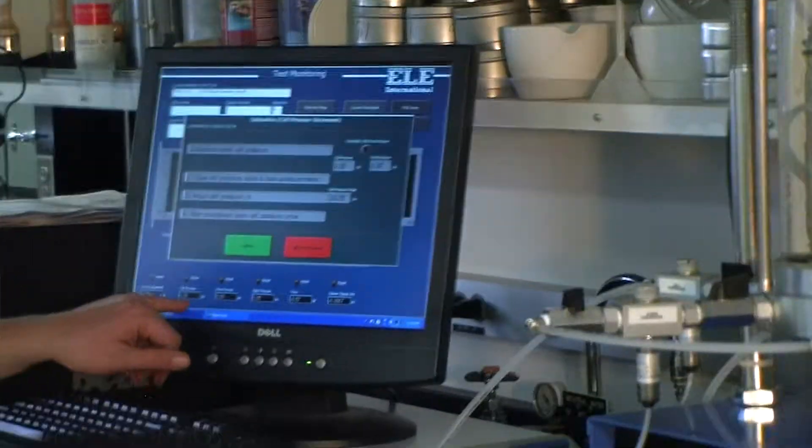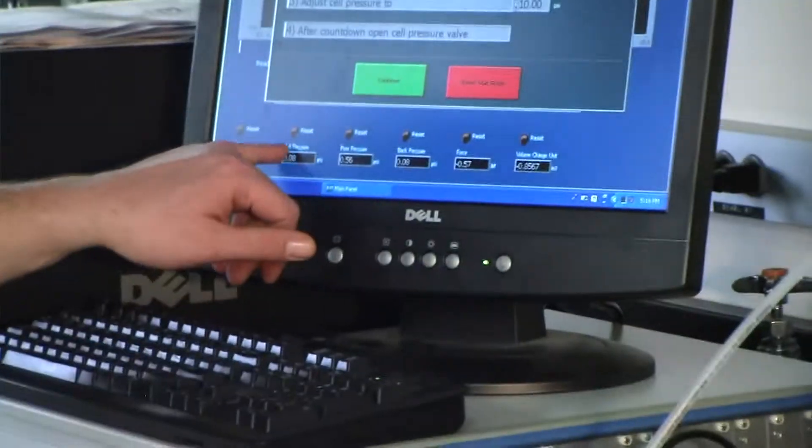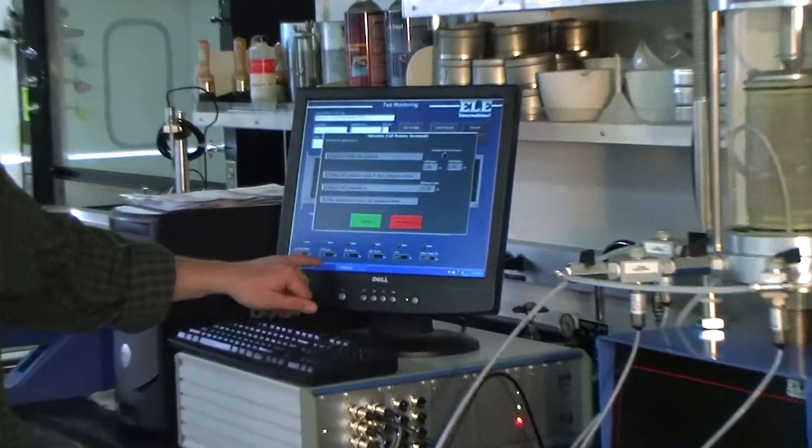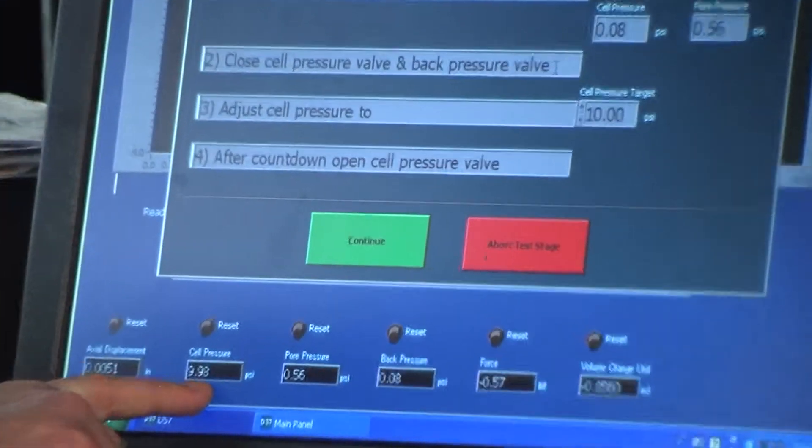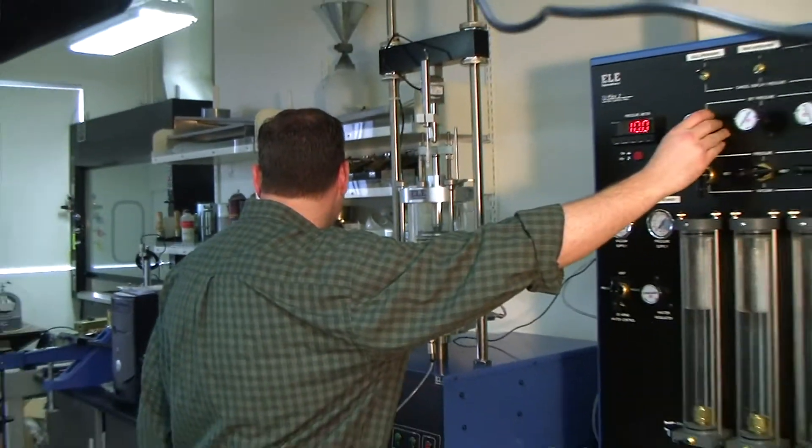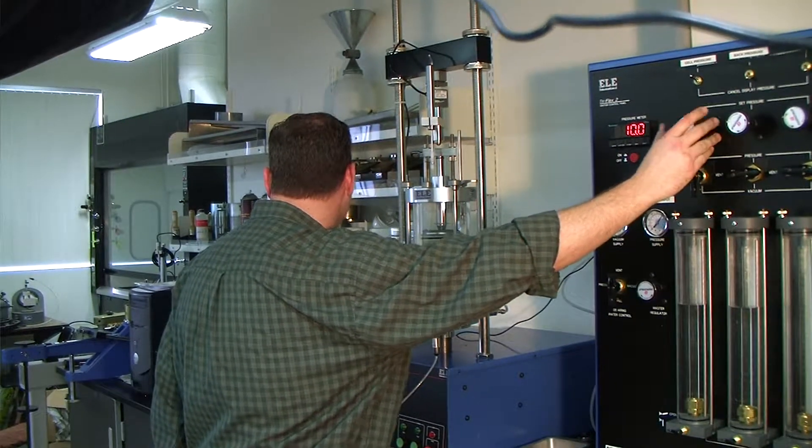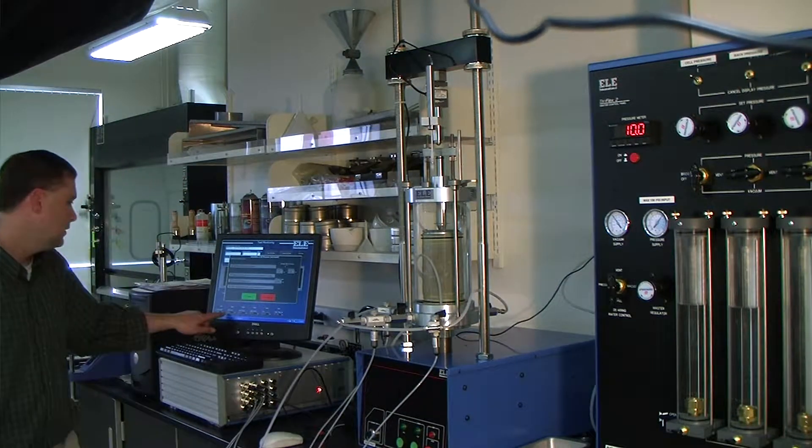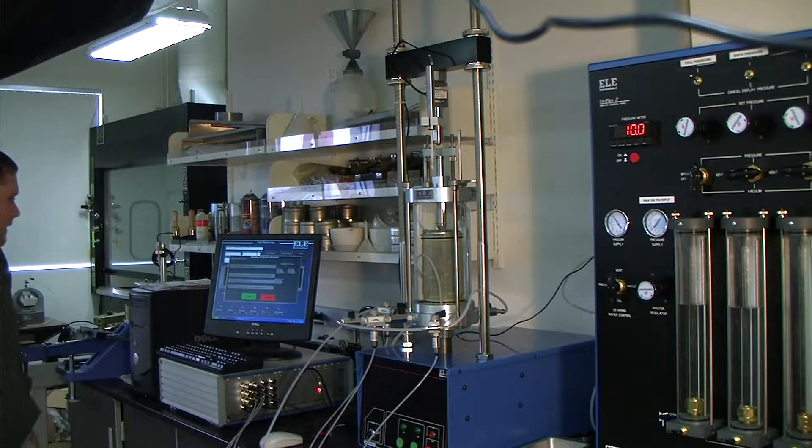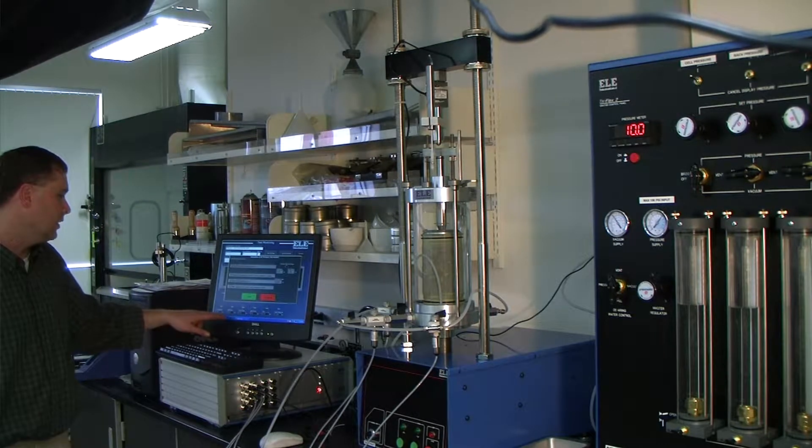Look and see what the value on the screen is saying. If you notice, the value on the screen hasn't changed because I didn't change the valve to pressure. Now that I have, it's saying 9.98 PSI. That's pretty close to 10. You want to do some fine adjustments to make sure you're right at 10 or very close. Being a little above 10 is okay in this case.